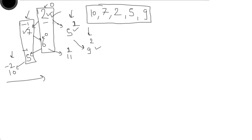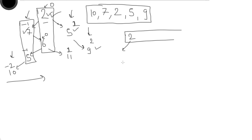We take the help of a queue. We put the root item into the queue first. Then we remove the first value from the queue and operate until the queue is empty. We remove node 2 from the queue — the height of node 2 is 0. We also take the help of a TreeMap.